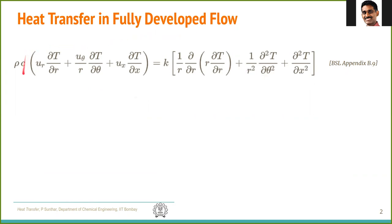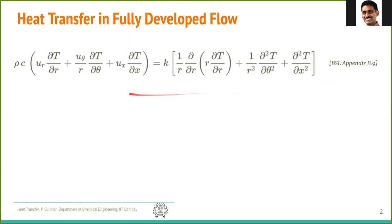The general Navier-Stokes equation and the energy equation can be obtained. The Navier-Stokes equation, when solved in the fully developed region, gives a parabolic velocity profile. This is the energy equation, taken from Byrd-Stewart-Lightfoot Appendix B9 — the generalized form of the energy equation with constant properties, where K and rho·c have come out of the differential.